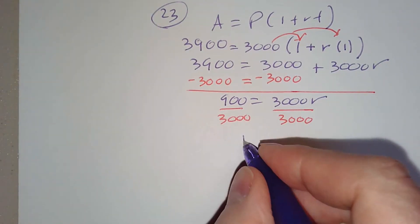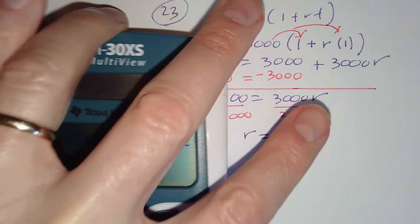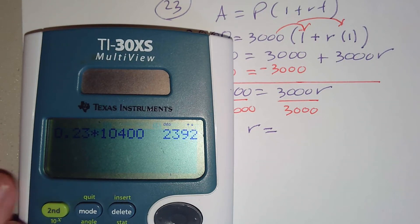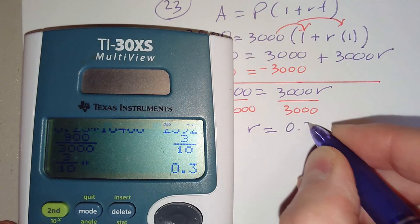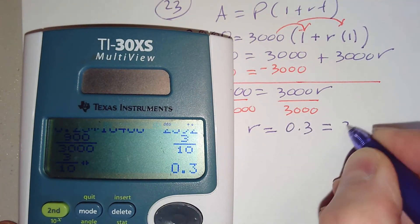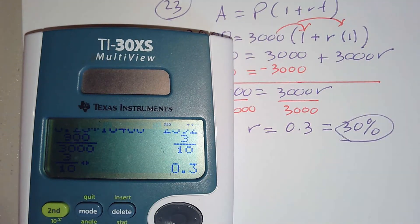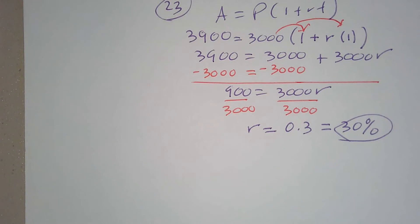And then we have to divide both sides by $3,000. Now keep in mind, when we do that division, that's going to give us R as a decimal. So our last step is we have to convert that into a percent. So that'd be 0.3, which we move our decimal point over two places. That would give us 30%. So that would be the simple interest rate.